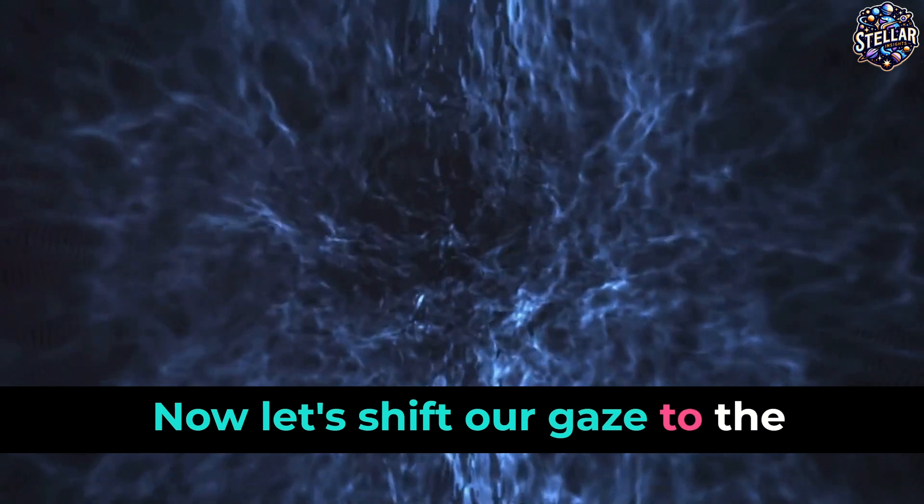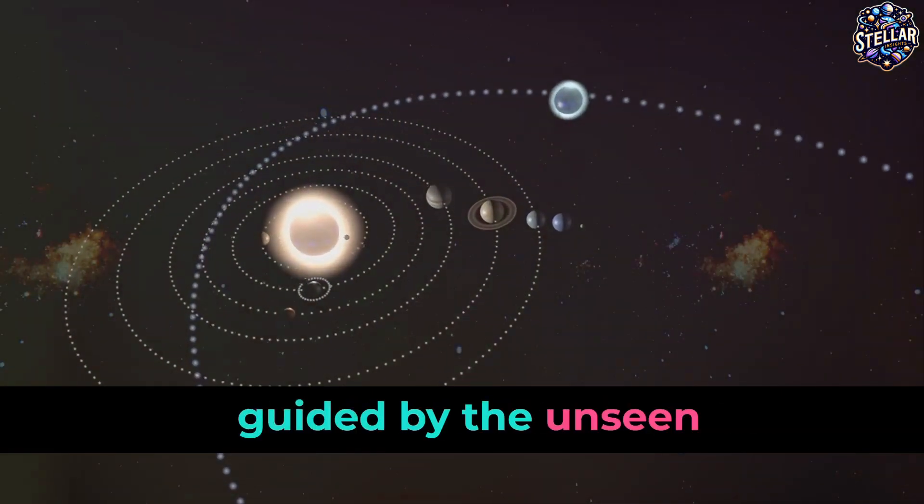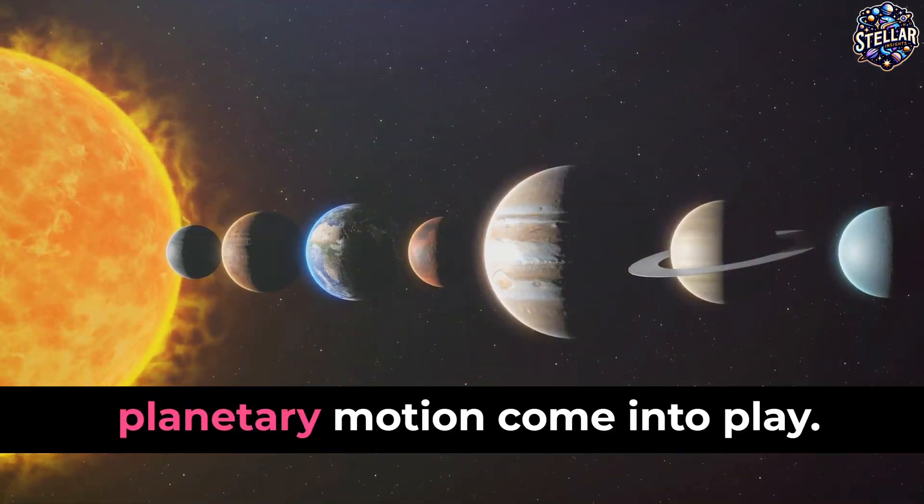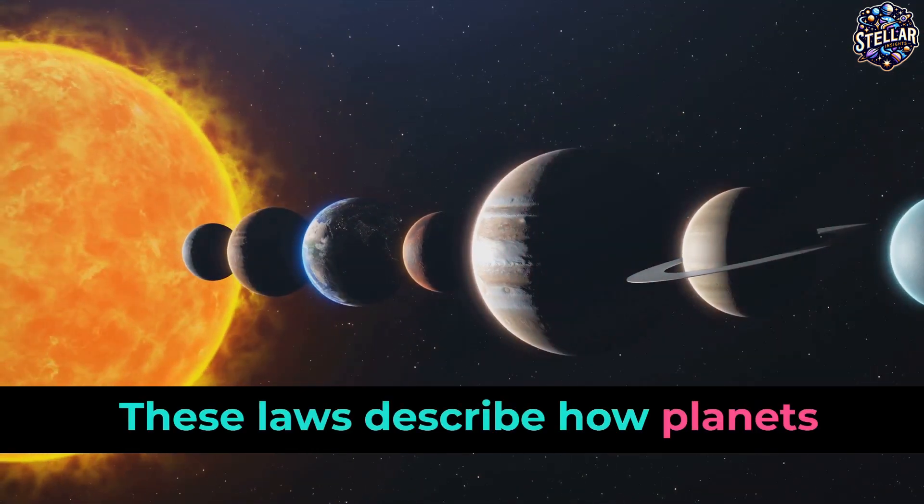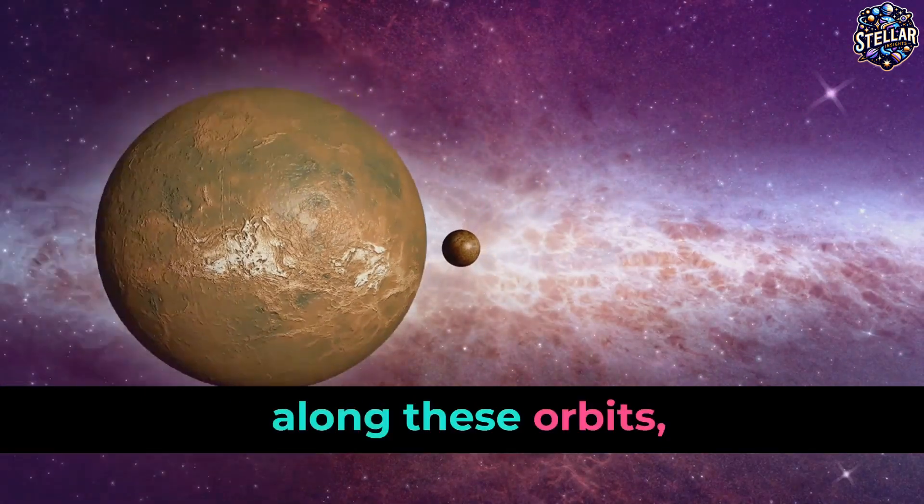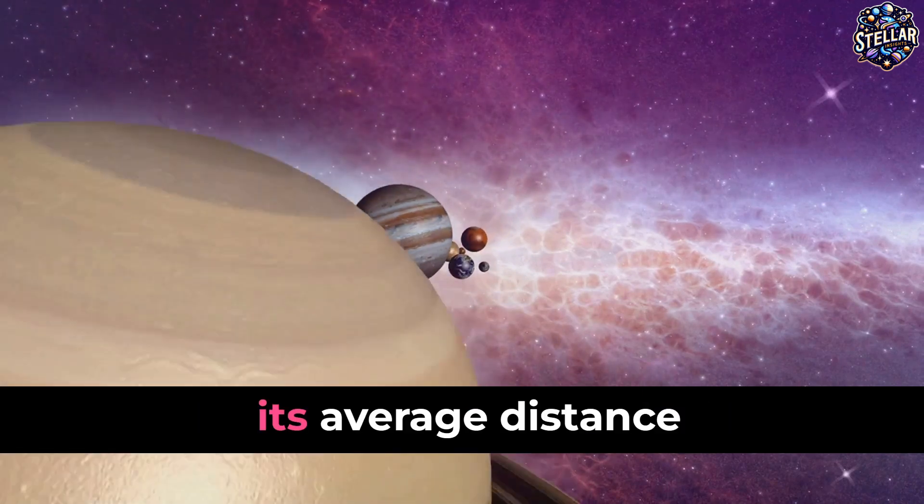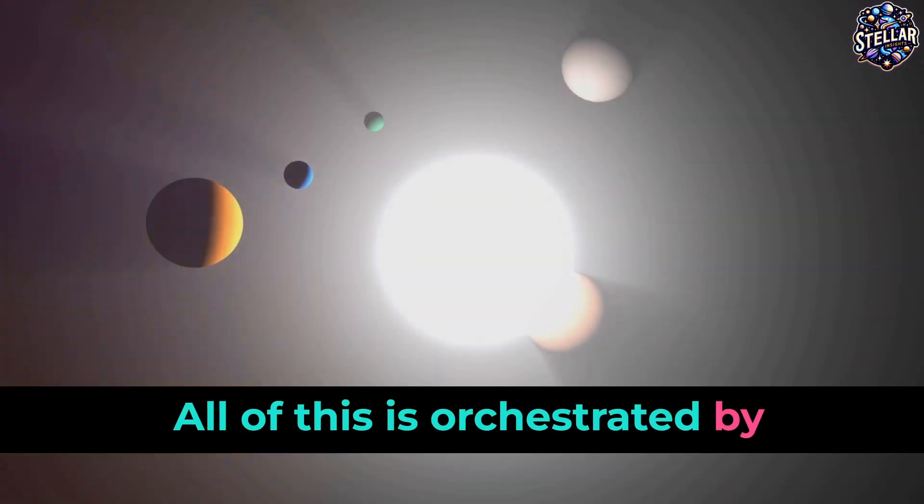Now, let's shift our gaze to the celestial ballet that is orbital mechanics, guided by the unseen hand of gravity. This is where Kepler's laws of planetary motion come into play. These laws describe how planets move around the sun in elliptical orbits, how their speed varies along these orbits, and how the time a planet takes to orbit the sun is related to its average distance from the sun.